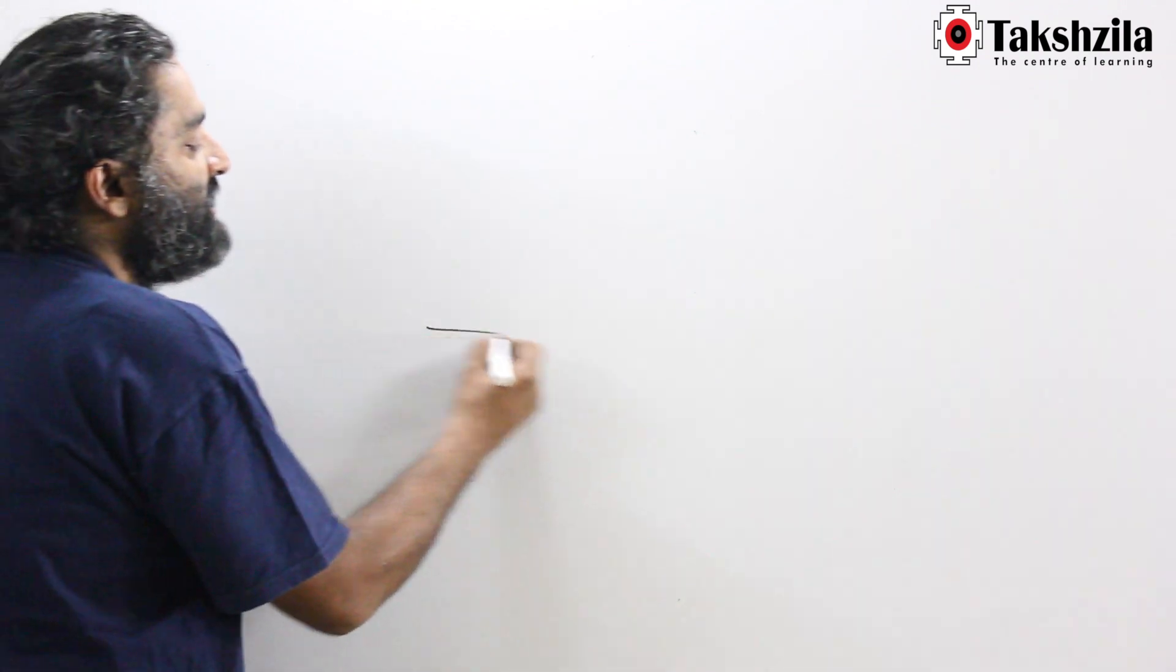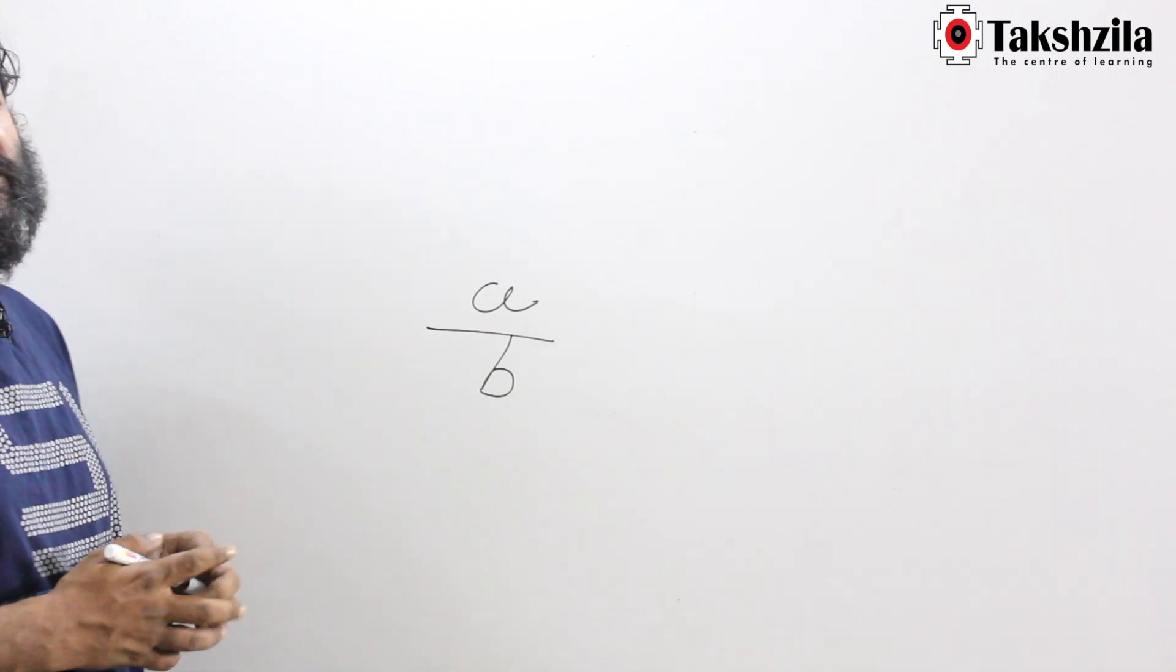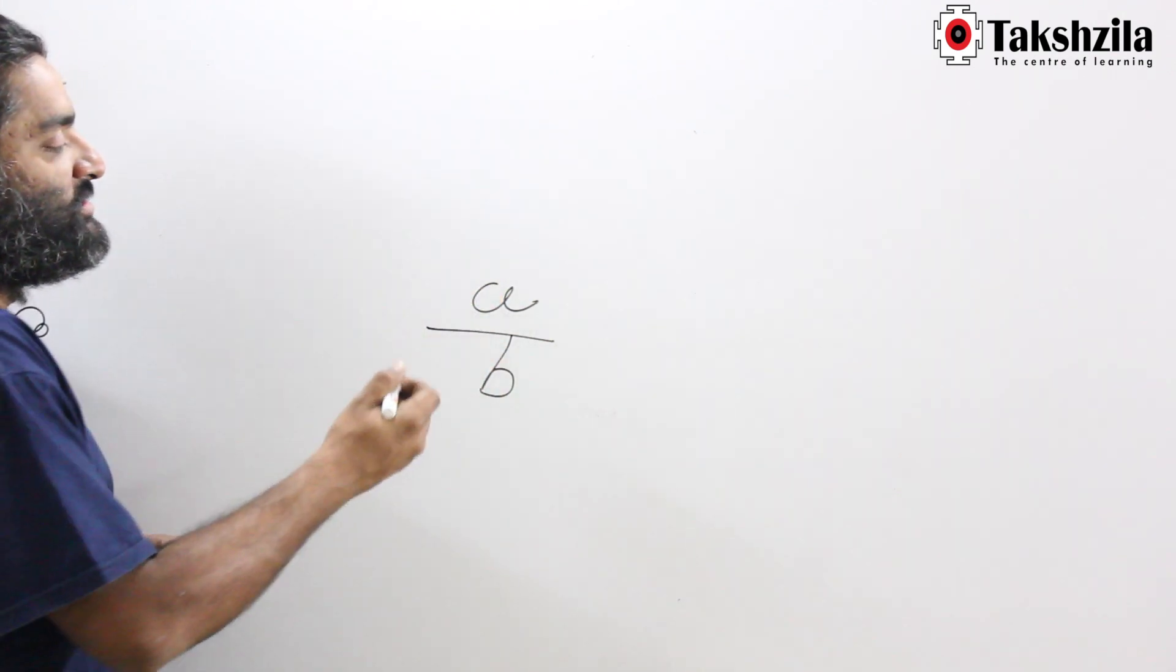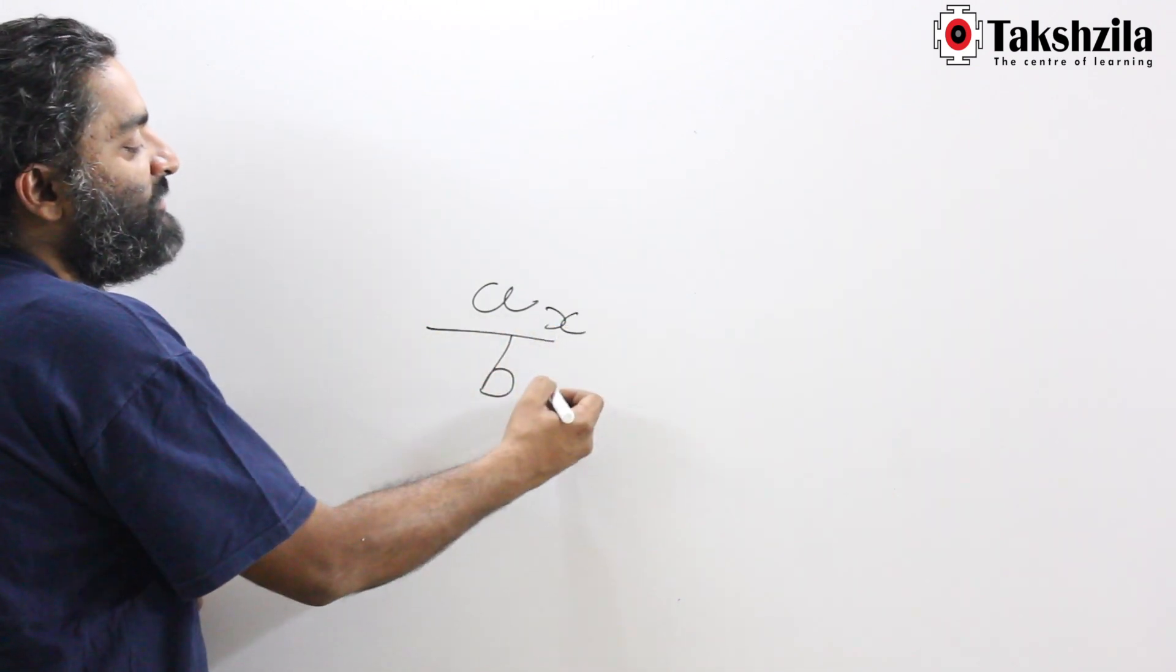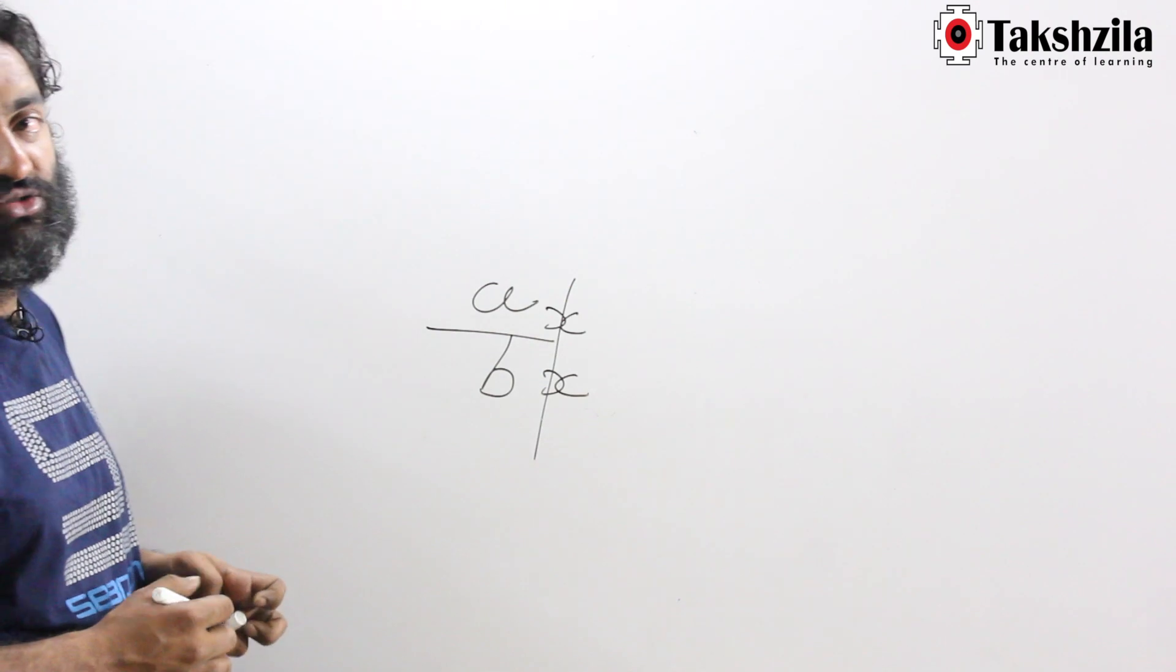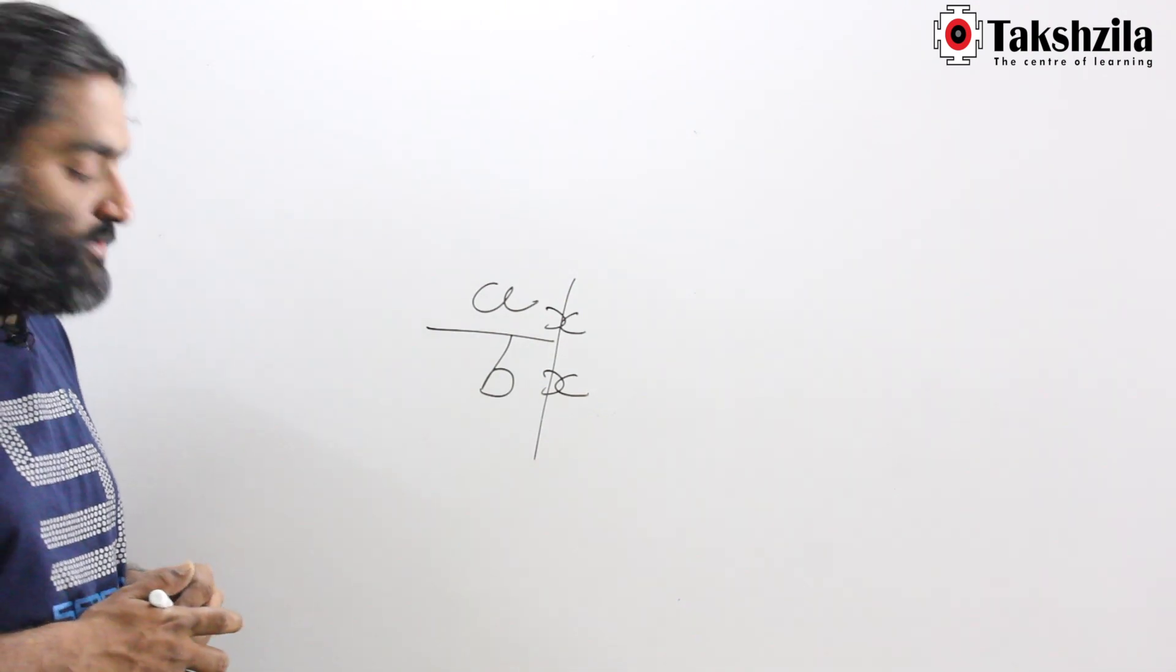We discussed yesterday that ratio is a relationship, a numerator and denominator kind of relationship, or a fractional relationship. We also learned that as long as we multiply the numerator and denominator by the same thing, the ratio does not get disturbed. This was part of the stuff we learned yesterday.